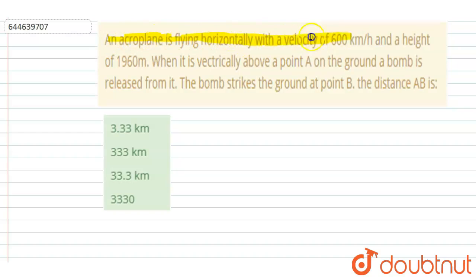An airplane is flying horizontally with a velocity of 600 kilometers per hour at a height of 1960 meters. When it is vertically over point A on the ground, a bomb is released from it. The bomb strikes the ground at point B.